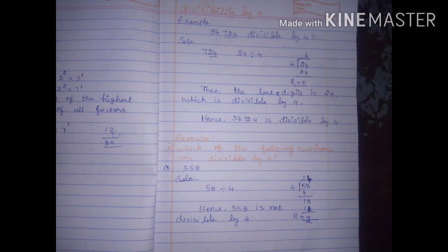58 divided by 4: 1 times 4 is 4, subtract to get 1 remainder. Then 8 divided gives 18, 4 times 4 is 16, remainder is 2. The remainder value is not 0. Hence, 558 is not divisible by 4.